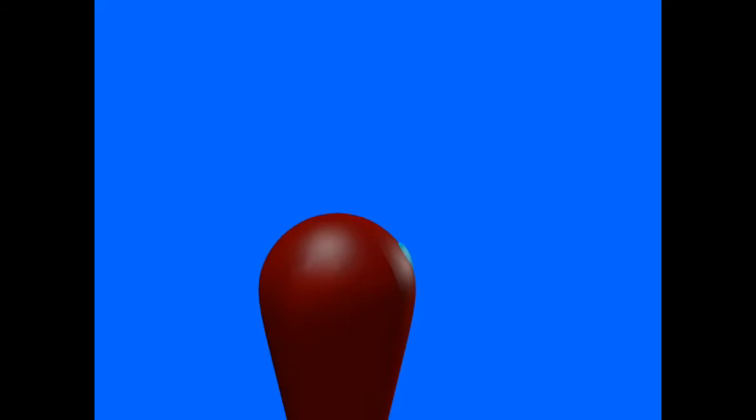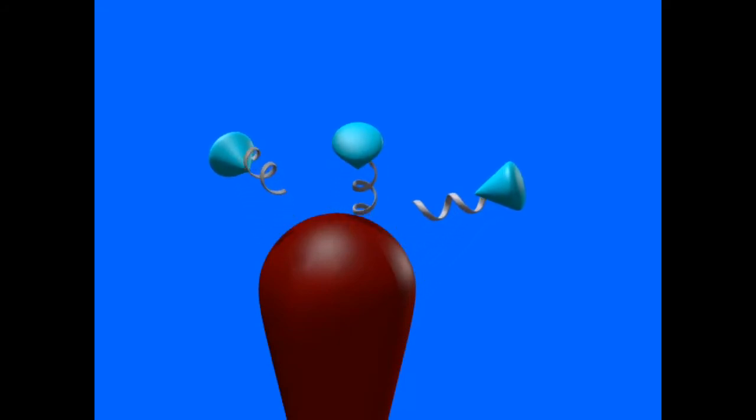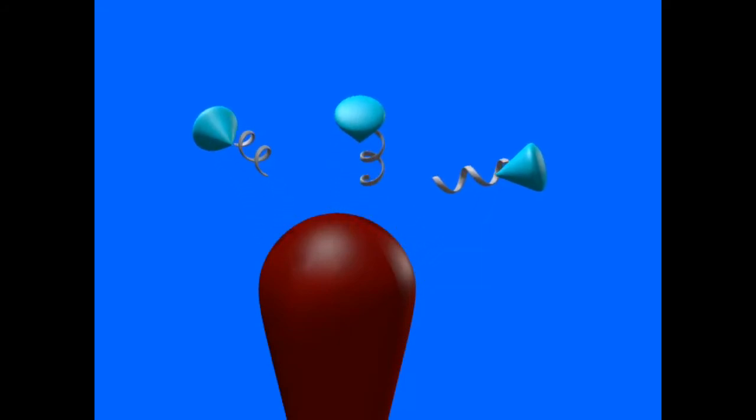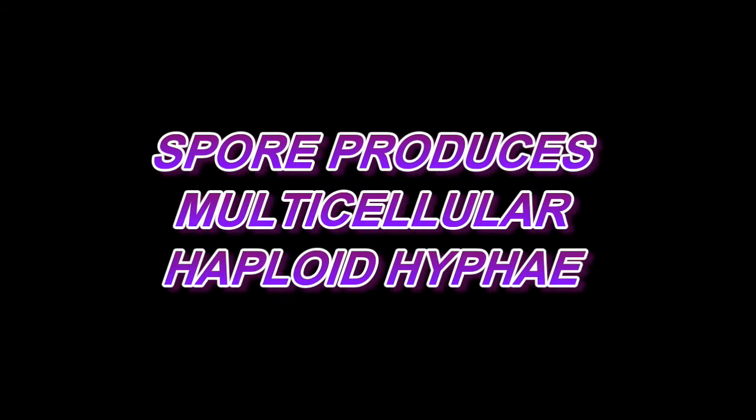As in all groups of fungi, there are variations in life cycle. In this example, the haploid zoospores, which are flagellated and motile — a characteristic of the chytrids — will germinate to produce a multicellular mycelium of hyphae, which is haploid. So this is a haploid chytrid.